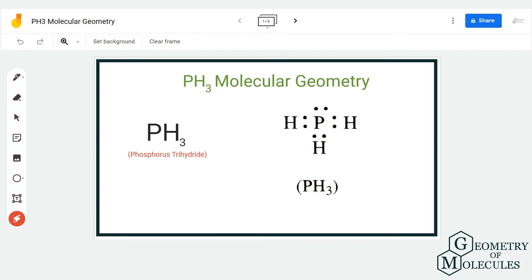So here is a Lewis structure for PH3 molecule in which the phosphorous atom is forming single bonds with three hydrogen atoms and it also has a lone pair of electrons.